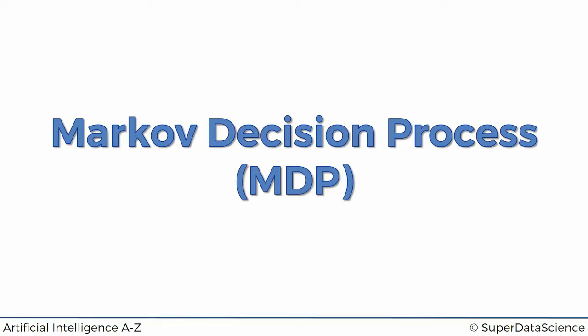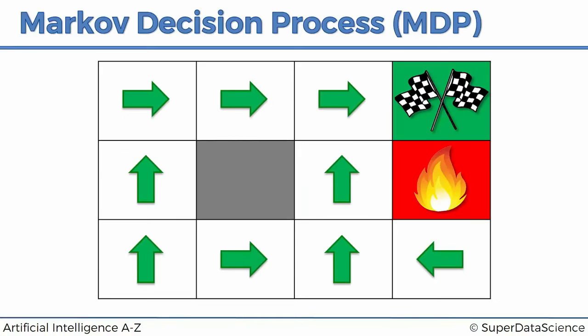Hello and welcome back to the course on artificial intelligence. Today we're talking about Markov decision processes or MDPs. Last time we stopped on the concept of a map. Because we've calculated the values based on the Bellman equation, we can derive this map for our agent in this maze.